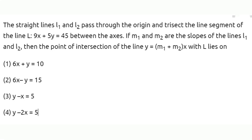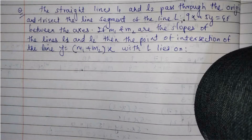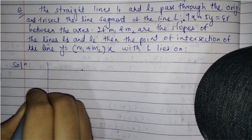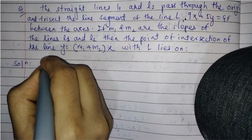The question says: the straight lines L1 and L2 pass through the origin and trisect the line segment of line L, which is 9x plus 5y equals 45, between the axes. If M1 and M2 are the slopes of lines L1 and L2, then the point of intersection of the line y equals (M1 plus M2)x with line L lies on which line? Let us understand this graphically.